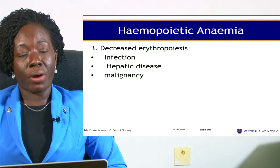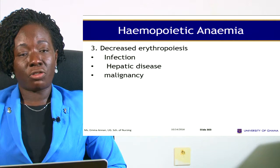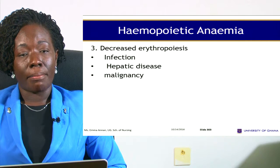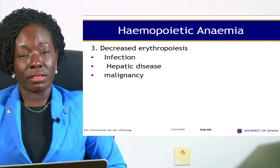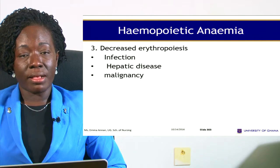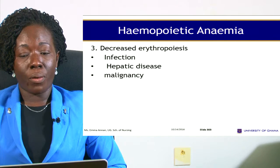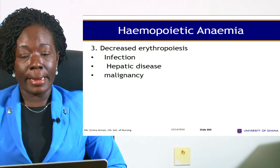Decreased erythropoiesis is usually caused by infection, hepatic diseases, and malignancies. All these are causes of hemopoietic anemia.